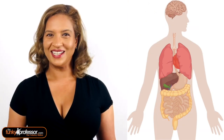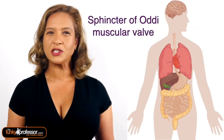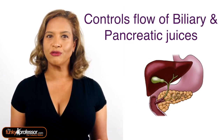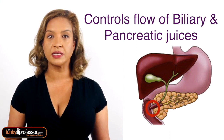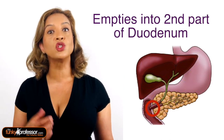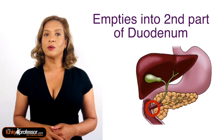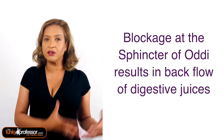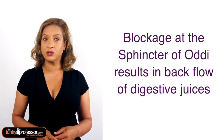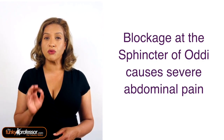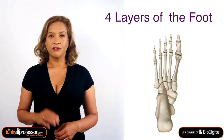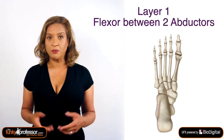Question 3: The sphincter of Oddi is a muscular valve found in the abdomen. It controls the flow of fluid from the common bile duct and the pancreatic duct into the second part of the duodenum. If this valve doesn't work properly, it can cause a buildup and backflow of biliary and pancreatic juice, leading to really severe abdominal pain.